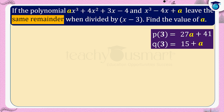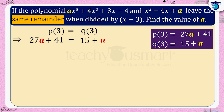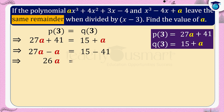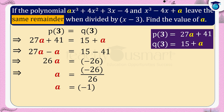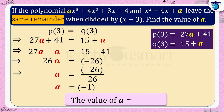Since the remainders are the same, p of 3 equals q of 3, which implies 27a plus 41 equals 15 plus a. This implies 27a minus a equals 15 minus 41, which implies 26a equals minus 26, which implies a equals minus 26 divided by 26. Therefore, the value of a is minus 1.